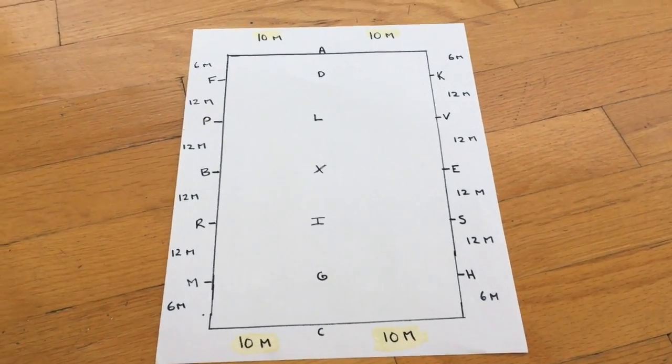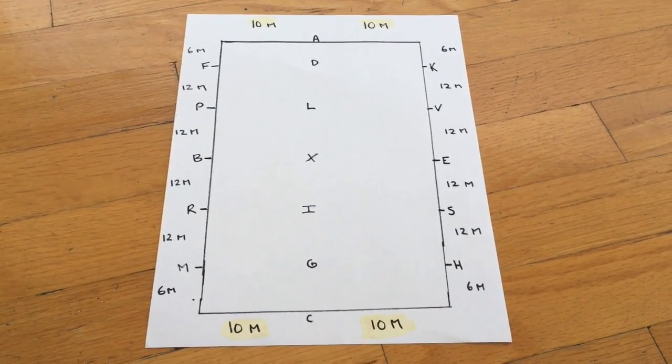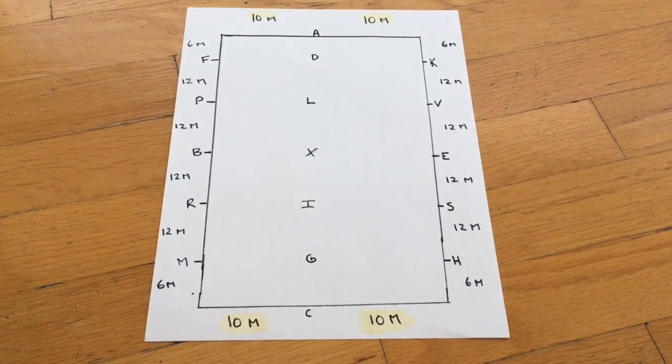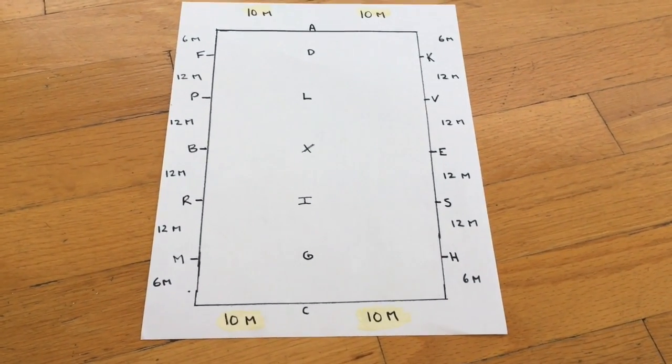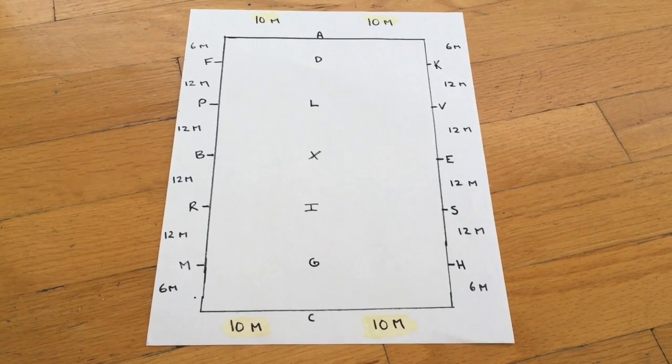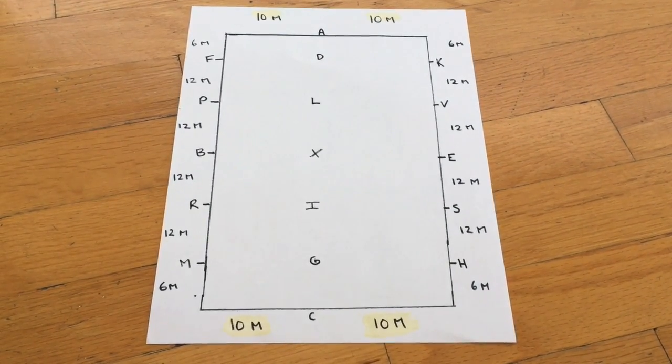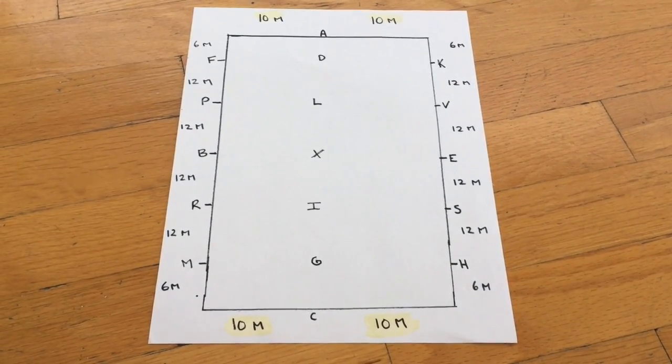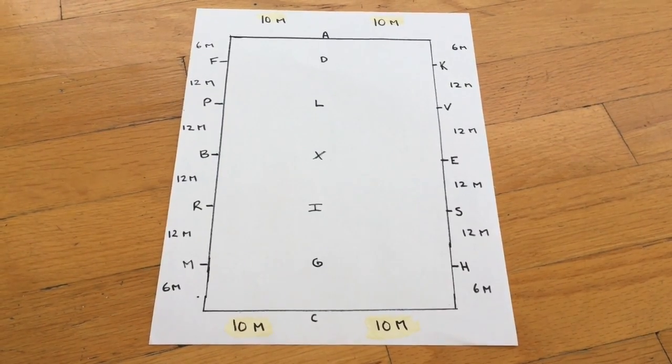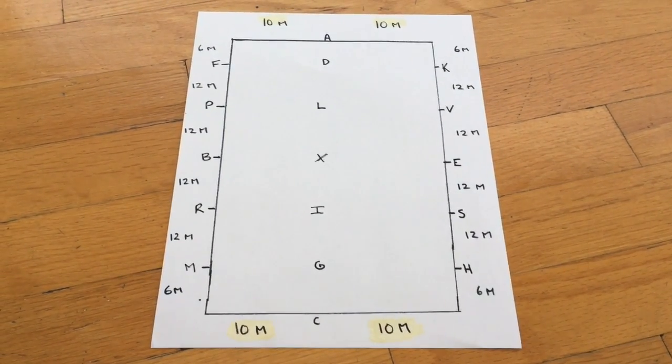Today we're going to look at improving our dressage scores by riding more accurate movements. We're going to look at the 20-meter circle, which is a basic movement in training level. After that there are 15-meter circles and 10-meter circles as we progress up the levels, but we'll look at those later.